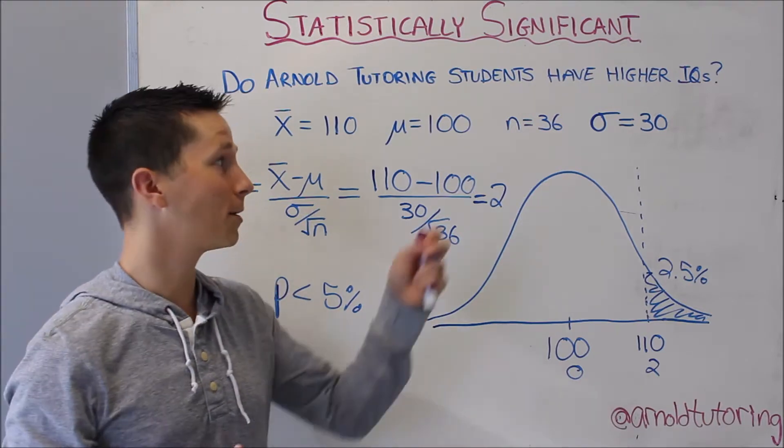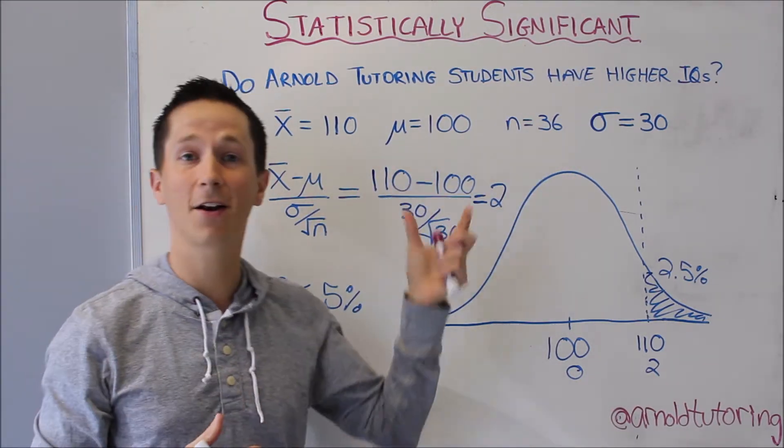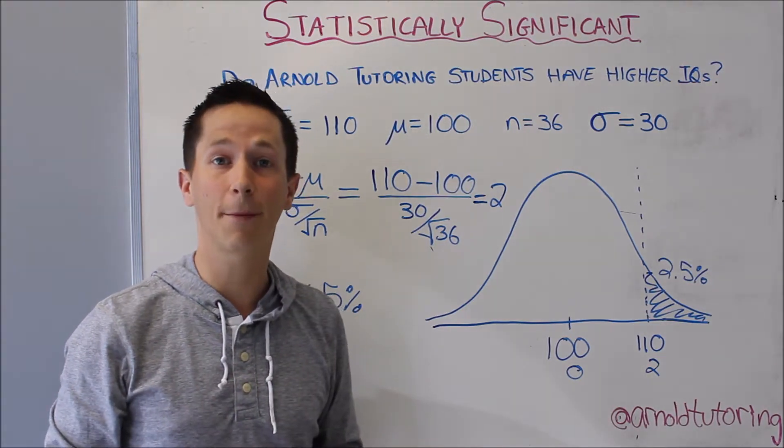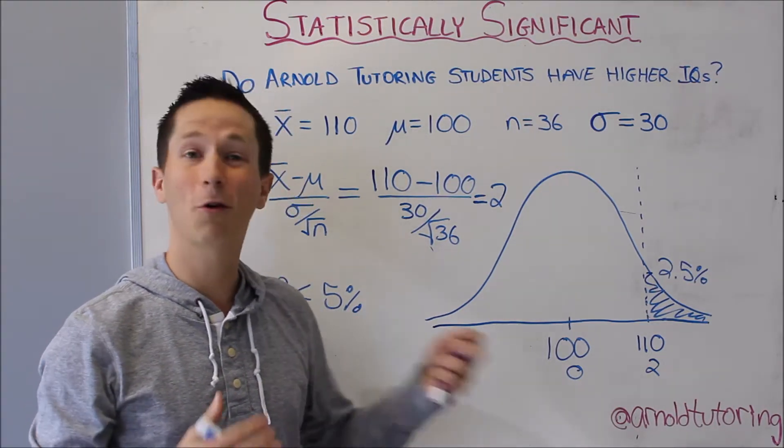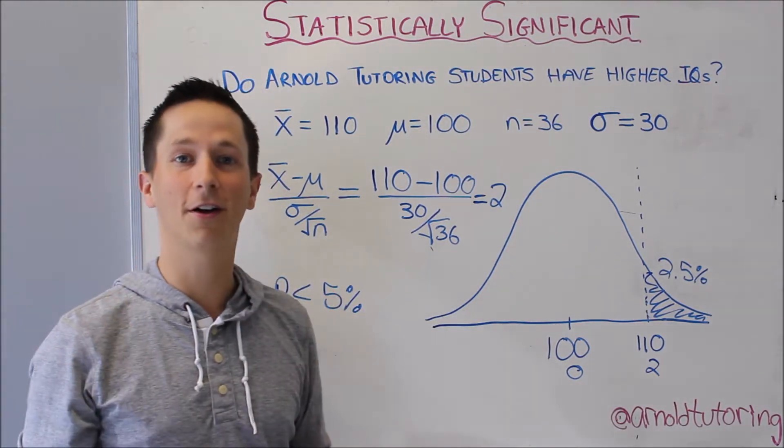In other words, it's really unlikely that we'd be able to survey 36 people and have their average IQ be 10 away from the population average. There would only be about a 2.5 percent chance of that happening.